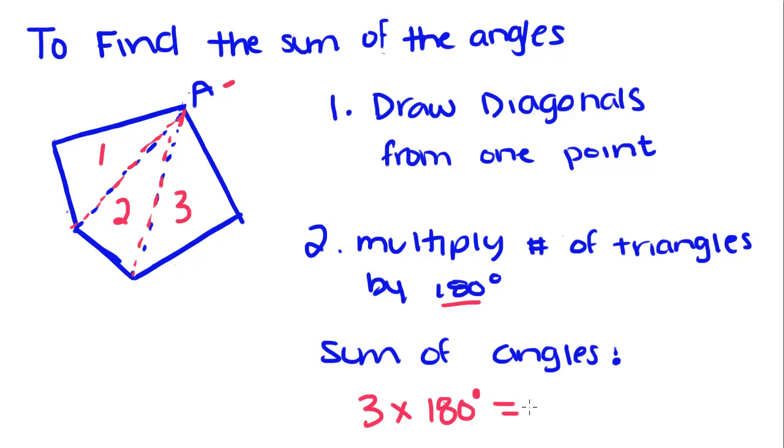The sum of interior angles of a triangle is 180. Once you do that, you get 540 degrees. Each one of these angles added together equals 540.